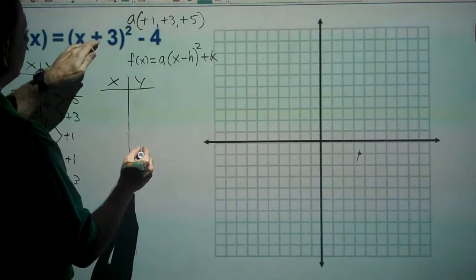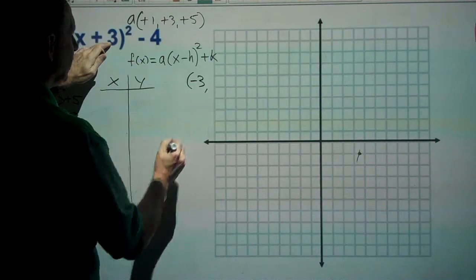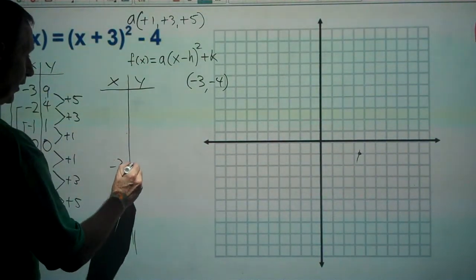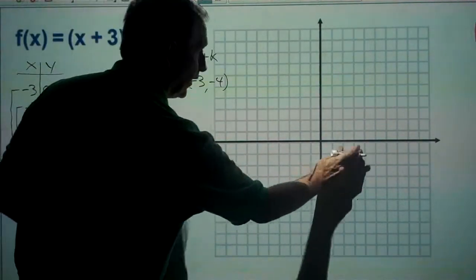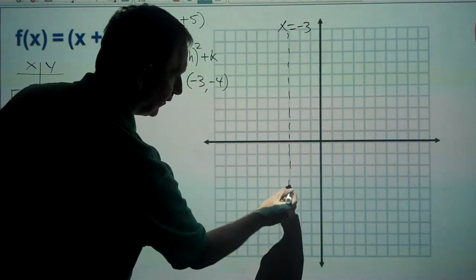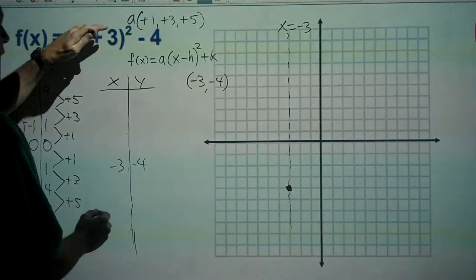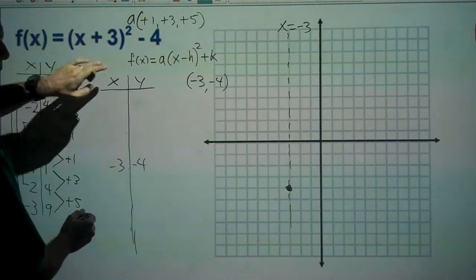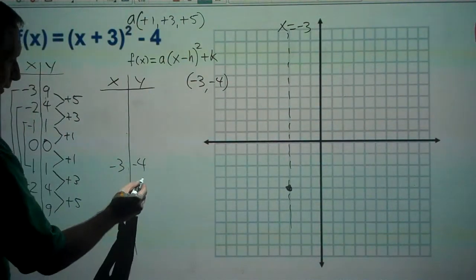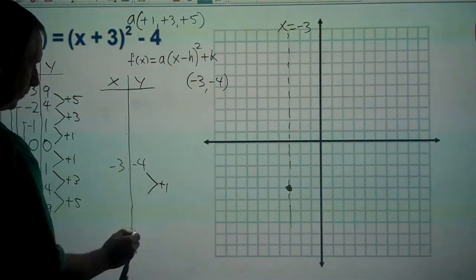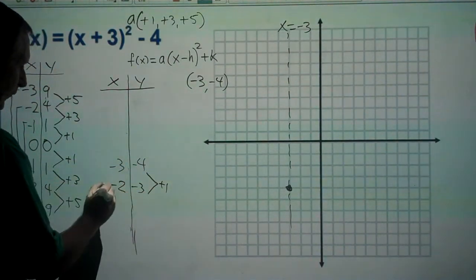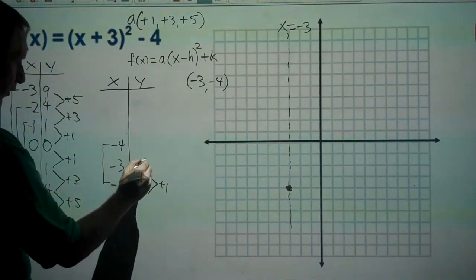In this case, x minus h means x must be negative three, so our x-coordinate is negative three and our y-coordinate is negative four — that's our vertex at (−3, −4). We plot that point and our axis of symmetry is at x equals negative three.